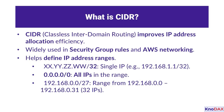Lastly, 192.168.0.0/27 defines a range of 32 IP addresses, starting from 192.168.0.0 and ending at 192.168.0.31. CIDR simplifies the way we manage and allocate IPs in networks of all sizes, making it a vital tool in modern cloud and network configurations.